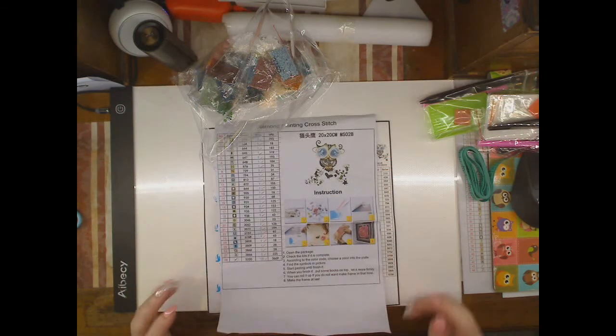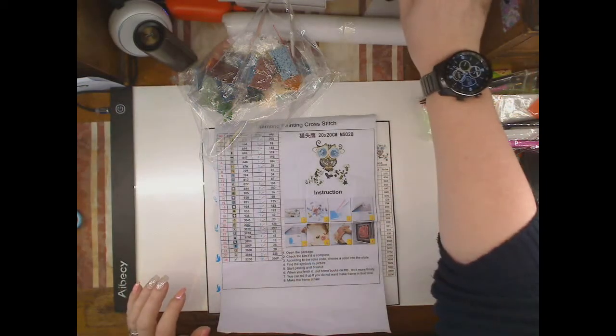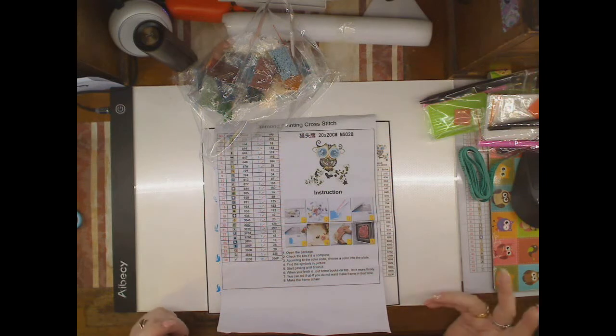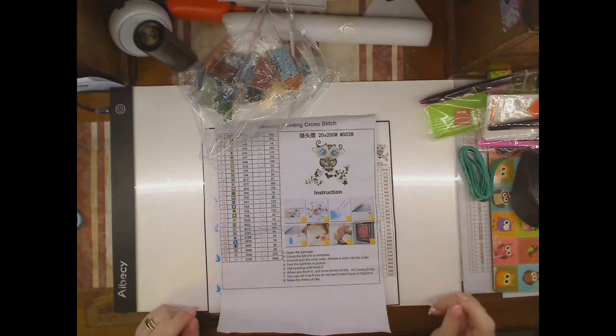So if you'd like to go check them out, this kit was I think seven bucks Australian. Yep, $7.60 soft tax. I think I paid $8.36 Australian, so you're looking at five bucks American give or take a few cents. So really nice for one of those in-between projects.